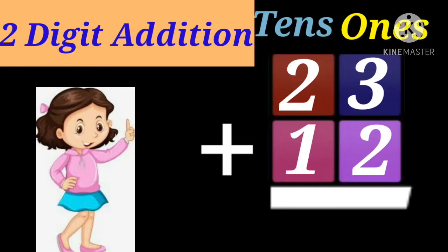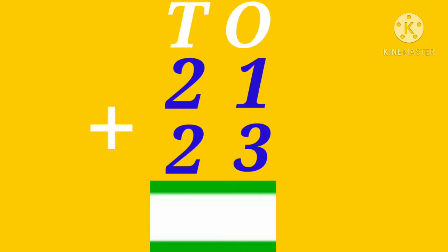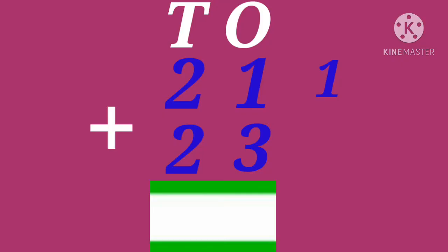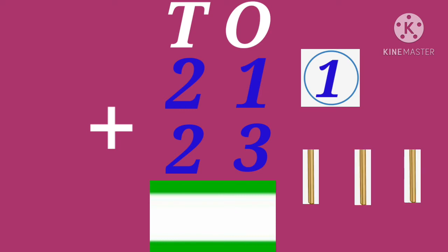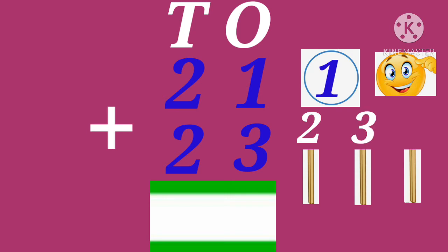2-digit addition. Given number is 1, circle the number 1 like this. Downside number is 3, draw 3 bars like this. 1, 2, 3. Count all together: 1, 2, 3, 4. Total sum 4.